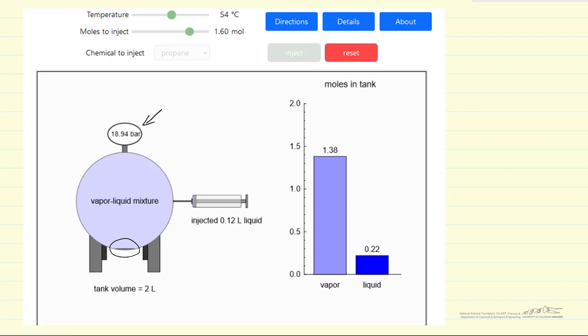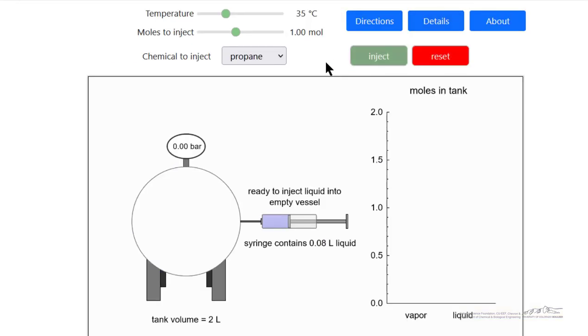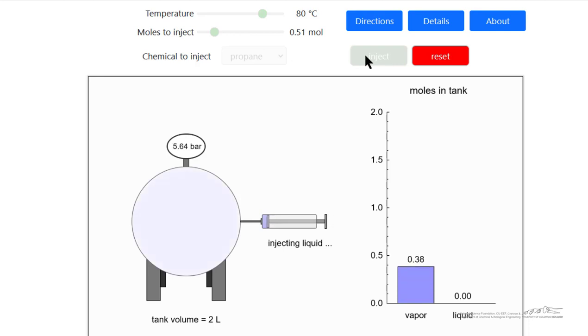Let's look at the interactive simulation. Here's the simulation. You see we can select either propane or toluene. Let's make the temperature high and inject a smaller amount. If I select inject, you'll see that we have only vapor present, no liquid.